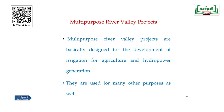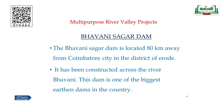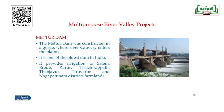Multi-purpose river valley projects are designed for the development of irrigation for agriculture and hydropower generation, and are used for many other purposes as well. The Bhavani Sagar Dam is located 80 kilometers from Coimbatore city in Erode district, constructed across the river Bhavani — it is one of the biggest earthen dams in India. The Mettur Dam was constructed in the gorge where the river Kaveri enters the plains; it is one of the oldest dams in India and provides irrigation to Salem, Erode, Karur, Tiruchirapalli, Thanjavur, Thiruvarur and Nagapattinam districts.